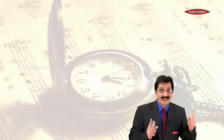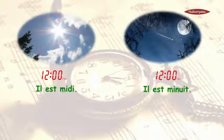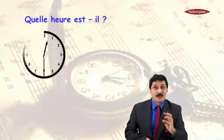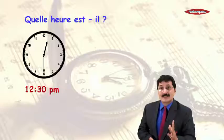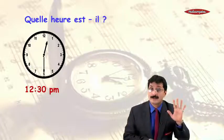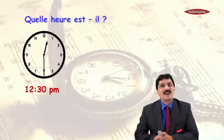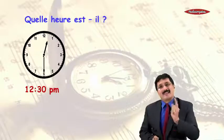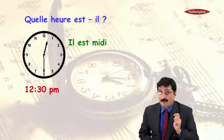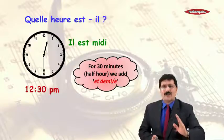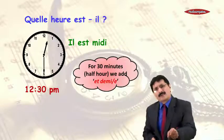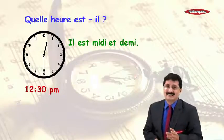We are going to continue with midi and minuit. The next question: quelle heure est-il? You can see it is 12:30 PM. My friends, tell me — 12:30 PM, will it be late in the night or in the afternoon? You are right, 12:30 PM is going to be in the afternoon, so 'à midi'. But wait — what about the 30? With midi, we don't use 'heure' or 'minutes', and for 30 you have to add 'demi', so 'à midi et demi'.